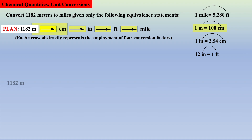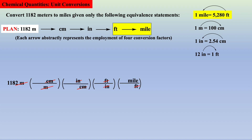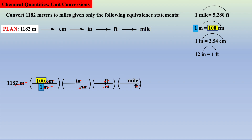First, write down what is given, then place the unit to be canceled in the denominator and the desired unit in the numerator for each conversion factor, as shown: meters to centimeters, centimeters to inches, inches to feet, feet to miles — and the desired unit of miles is obtained. Now simply go back and add the numerical values that allow the units in the numerator to equal those in the denominator; for example, 100 centimeters equals 1 meter, all supplied within the given definitions. Finally, solve the problem and round to the correct number of sig figs, which is 4.